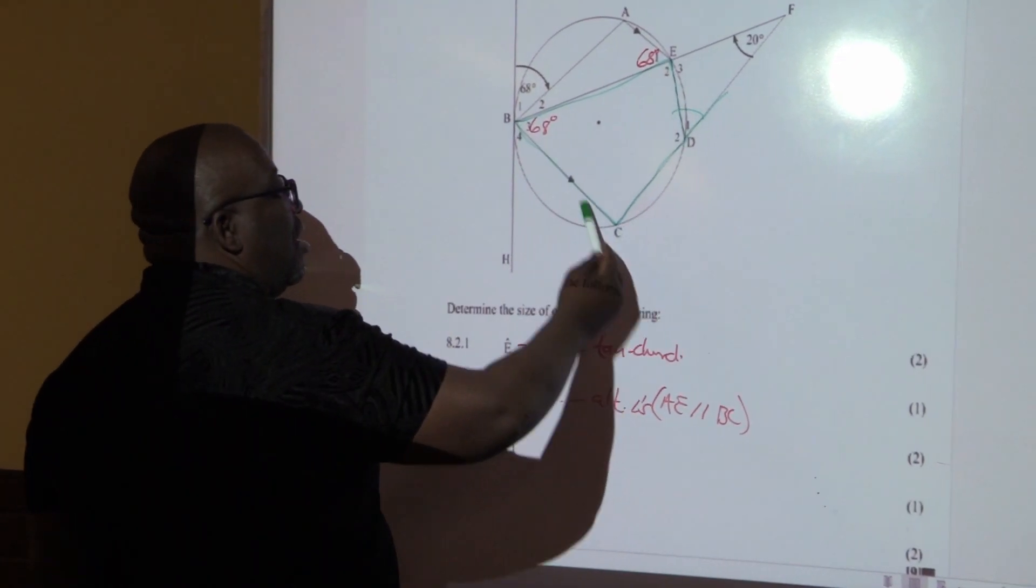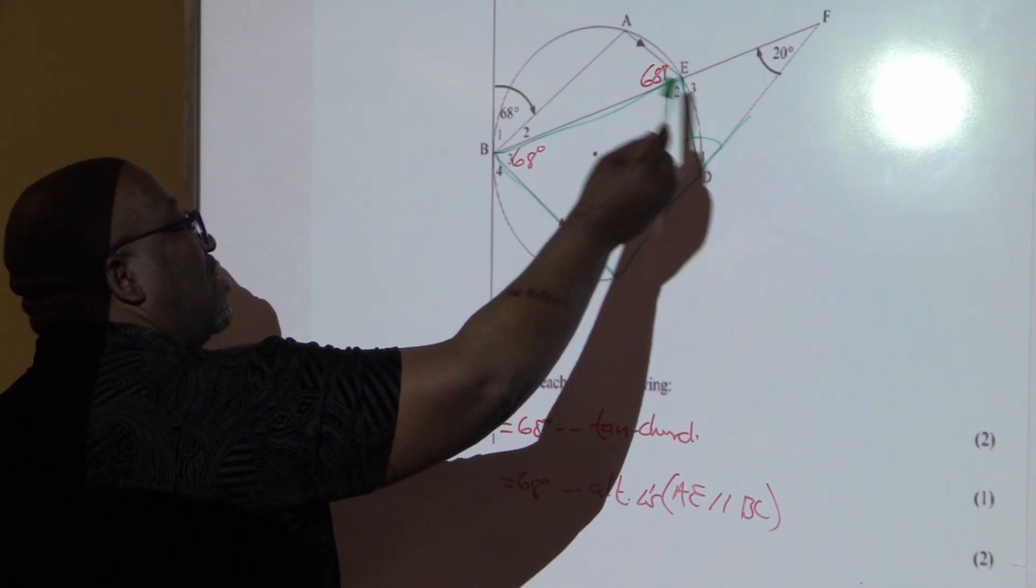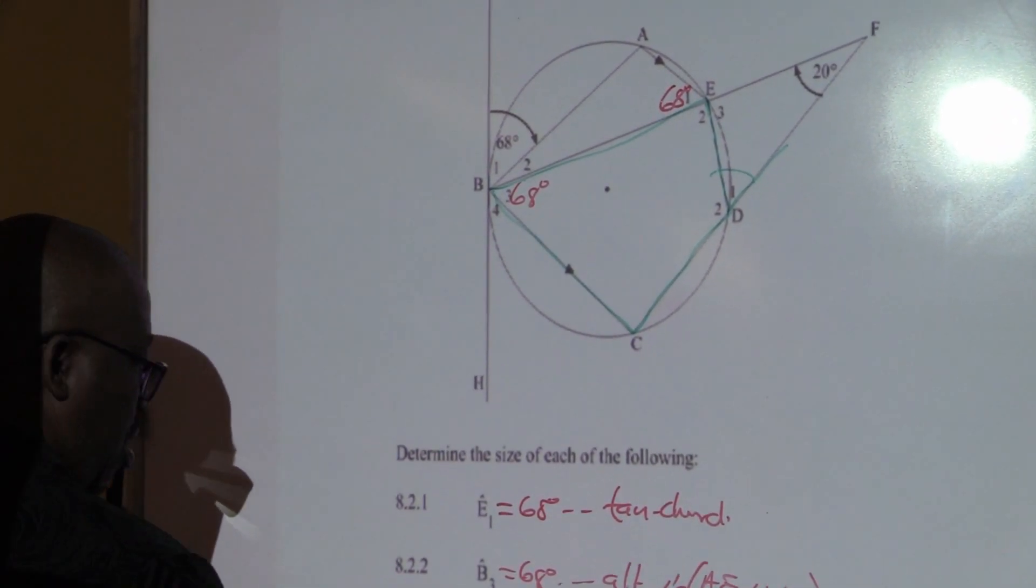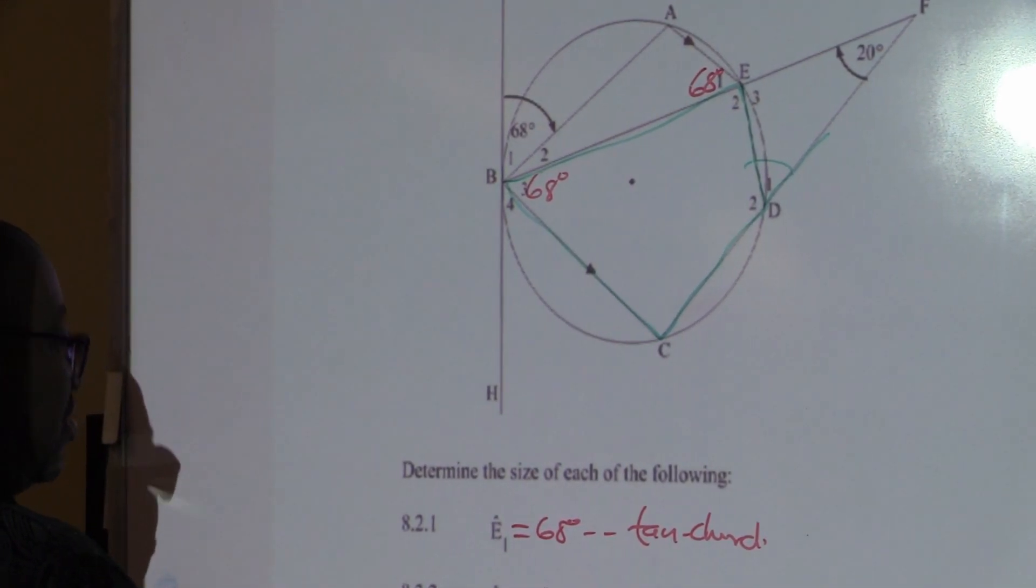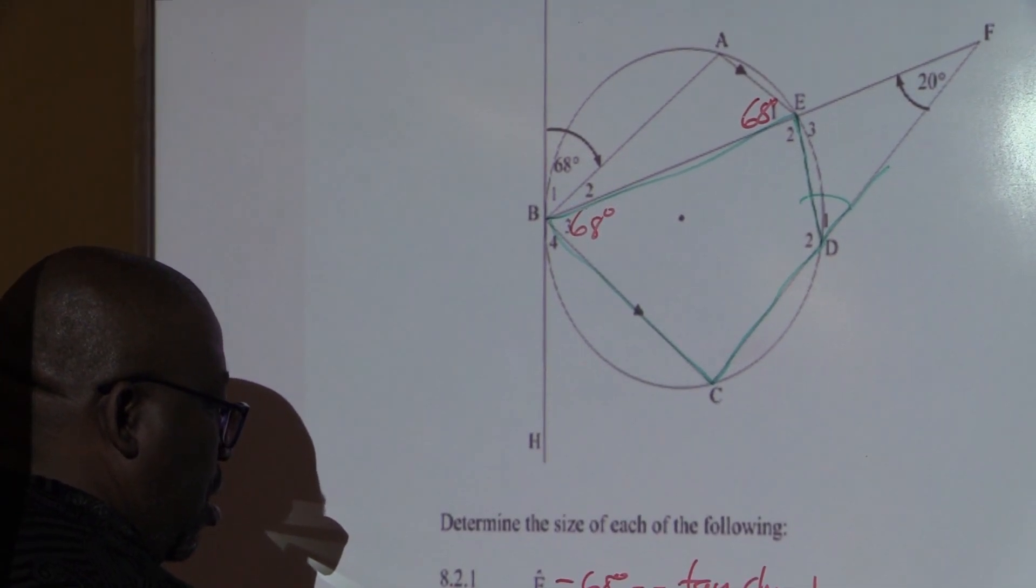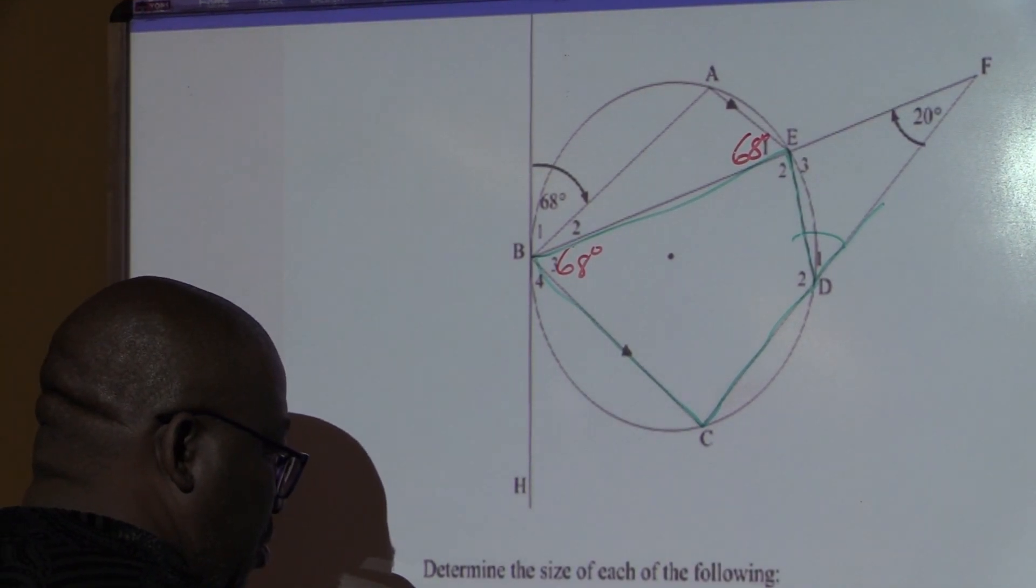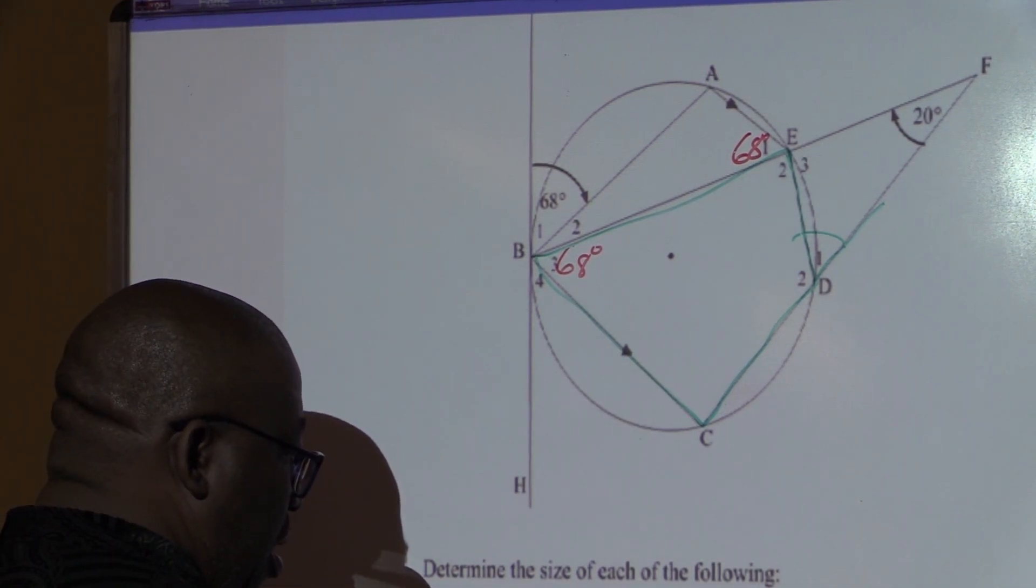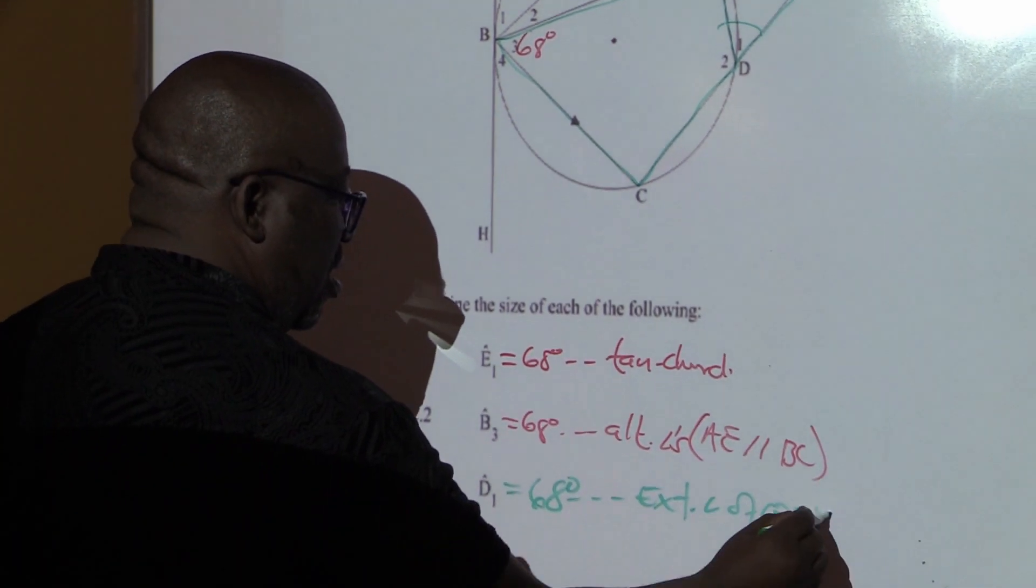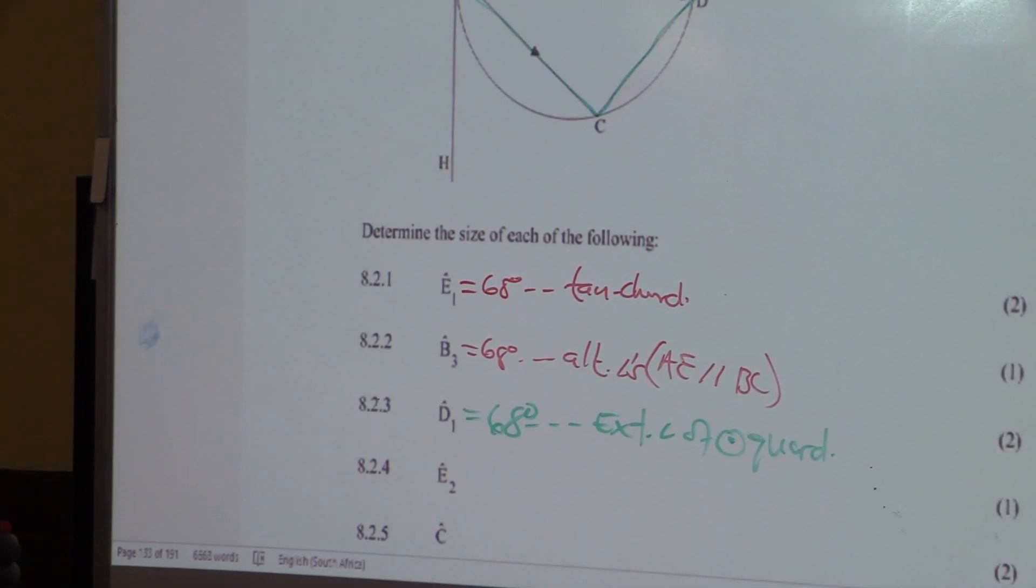Remember my theorem. Says the exterior angle of a cyclic quad is equal to the interior opposite angle. So D1 will also be equal to 68, exterior angle of a cyclic quad. So D1 is also equal to 68.